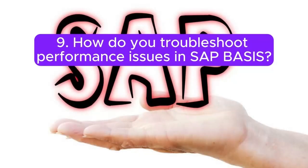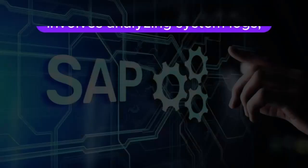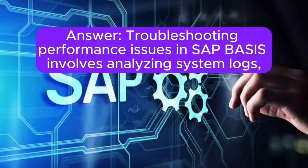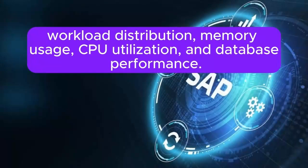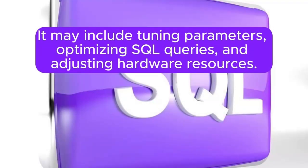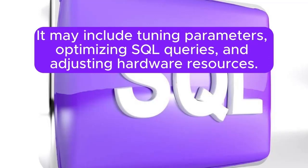Question 9: How do you troubleshoot performance issues in SAP BASIS? Troubleshooting performance issues involves analyzing system logs, workload distribution, memory usage, CPU utilization, and database performance. It may include tuning parameters, optimizing SQL queries, and adjusting hardware resources.